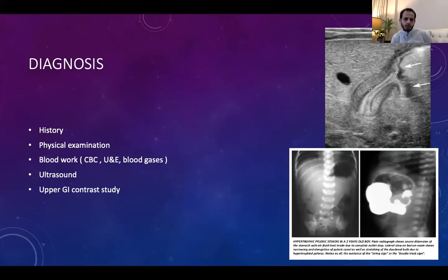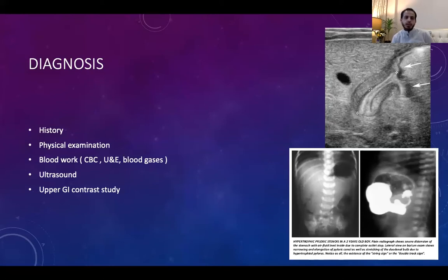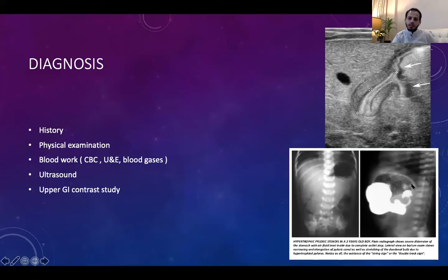The gold standard diagnostic modality is ultrasound, showing the pyloric mass. Pyloric muscle thickness should be 4 mm or more, and the pyloric canal should be 16 mm or more. In premature infants, a thickness of 3 mm can be accepted. If ultrasound is inconclusive or another differential needs to be excluded, upper GI contrast study is the next modality. It shows the string sign, shouldering sign, mushroom-like sign, delayed gastric emptying, and a beak or bird-beak appearance at the pyloric canal.